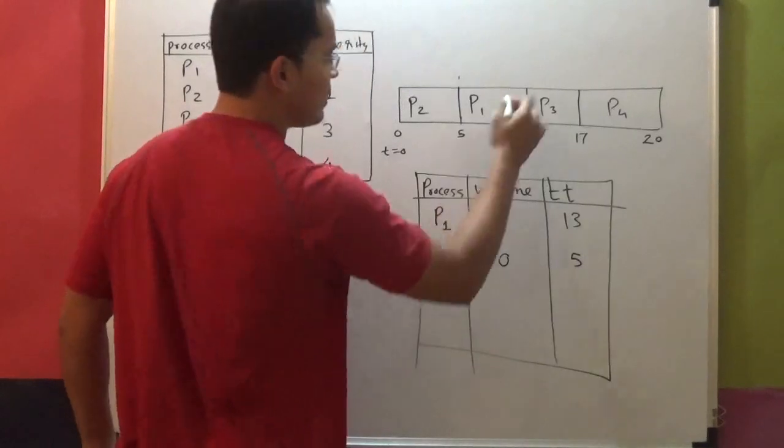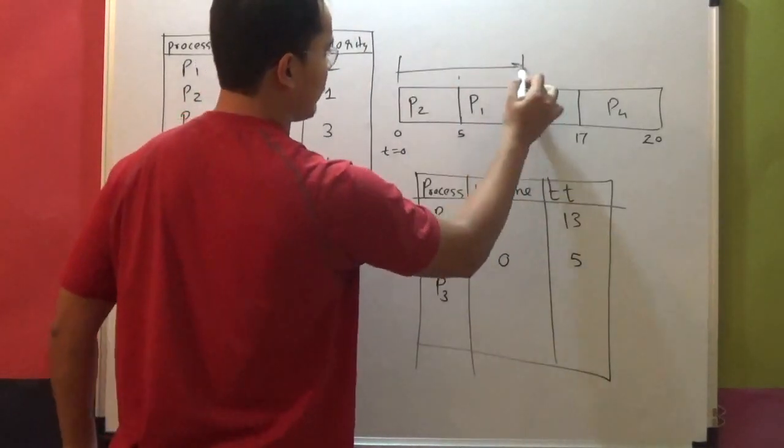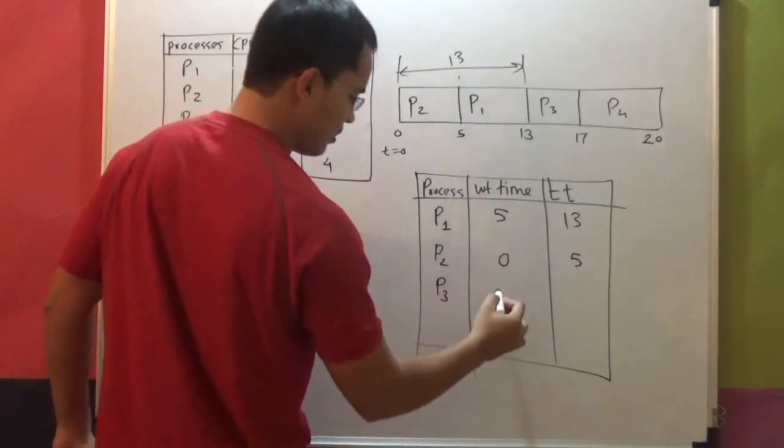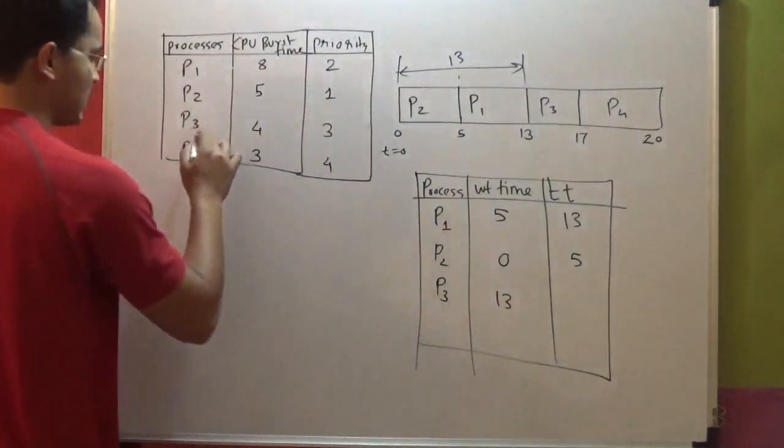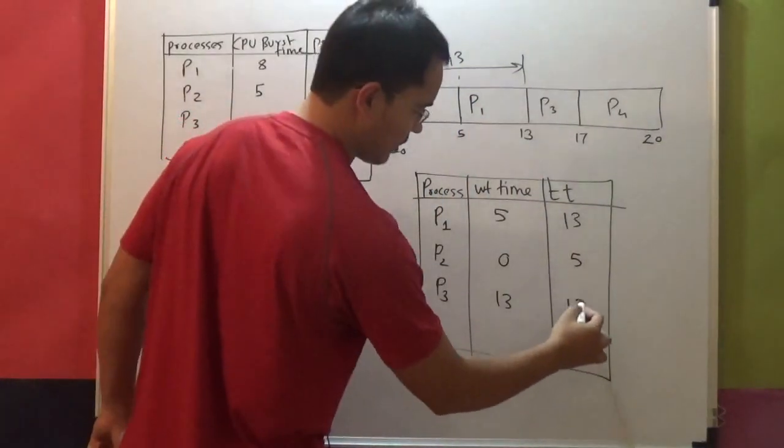P3, waiting time is 13. Waiting time is 13. Turnaround time is 13 plus 4, which is 17.